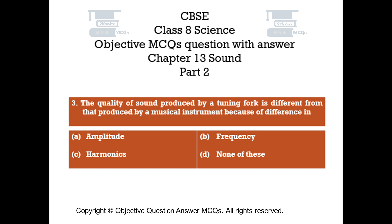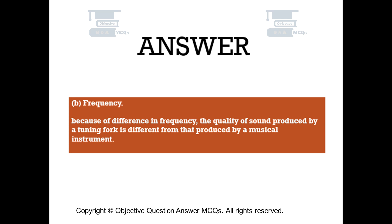Question number 3. The quality of sound produced by a tuning fork is different from that produced by a musical instrument because of difference in: Option A: Amplitude. Option B: Frequency. Option C: Harmonics. Option D: None of these. The right answer is option B — Frequency. Because of difference in frequency, the quality of sound produced by a tuning fork is different from that produced by a musical instrument.